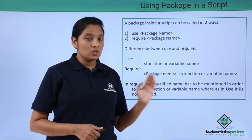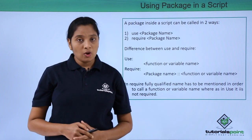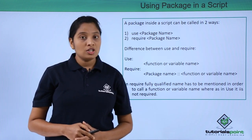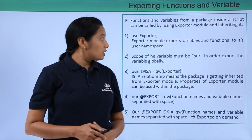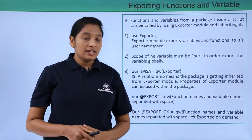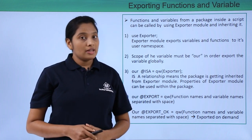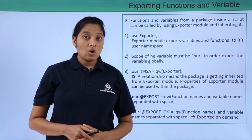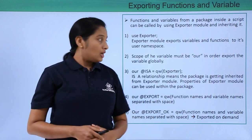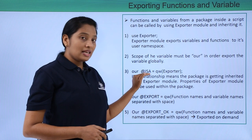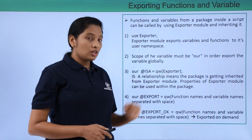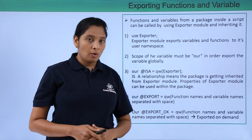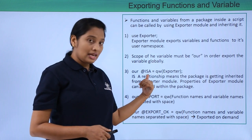To export your subroutines or variables which you have implemented in your package, you have to use a Perl module called Exporter. Use Exporter, and in order to export your variables, all variables have to be declared with our scope — that means all variables are exported globally. You have to give an @ISA relationship for the Exporter Perl module, meaning the package you are implementing will be the child class of the Exporter Perl module — that is, we are doing a single inheritance here.